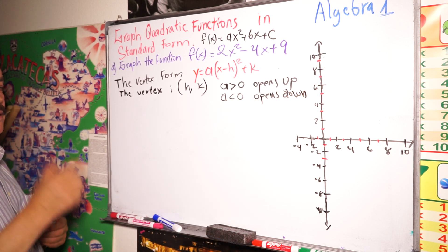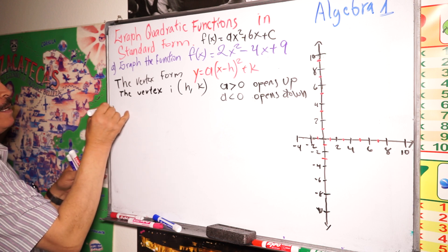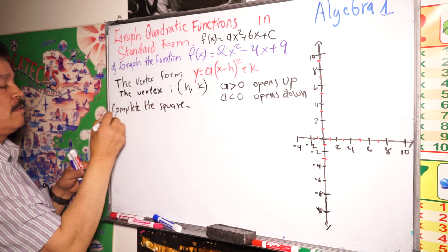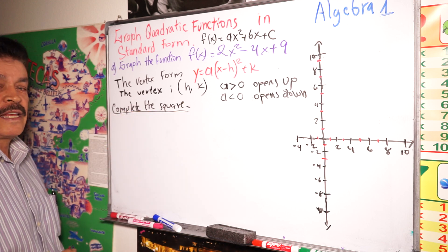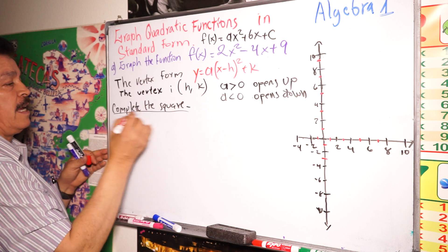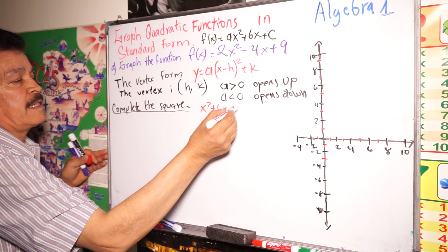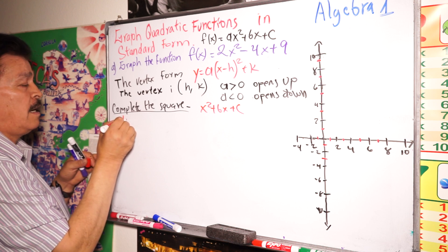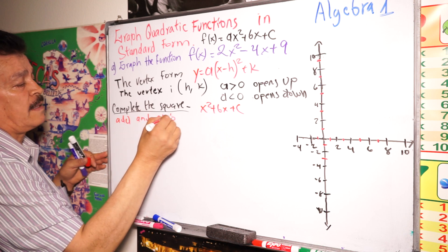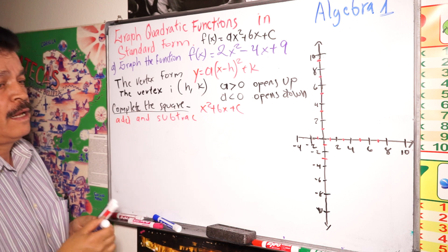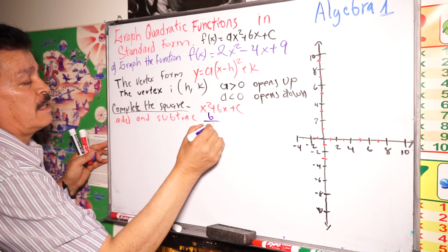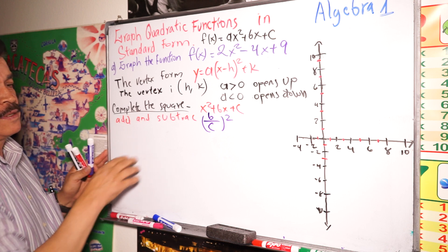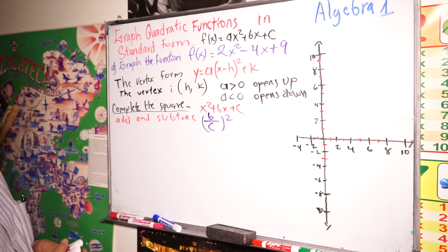Another concept we have to remember is completing the square. For the quadratic x squared plus bx plus c, we need to add and subtract (b divided by 2) squared. Then we group the terms to make a perfect square.